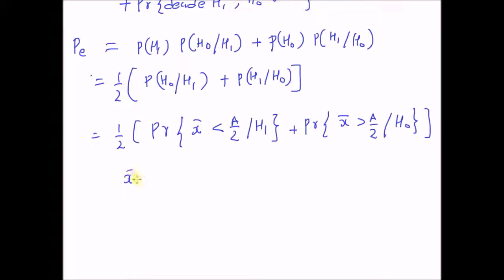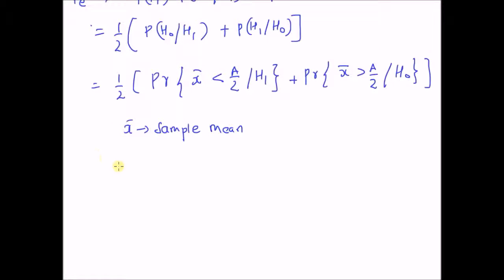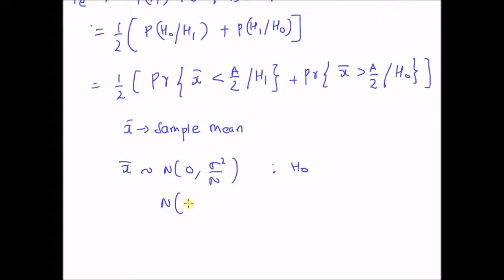Since x̄ is the sample mean, it has the following distributions: under H0, x̄ follows a normal distribution with mean 0 and variance σ²/N; and under H1, x̄ follows a normal distribution with mean A and variance σ²/N. These are the distributions of the test statistic x̄ under H0 and H1 respectively.